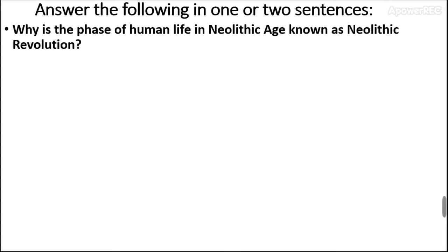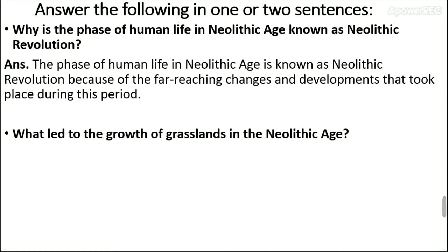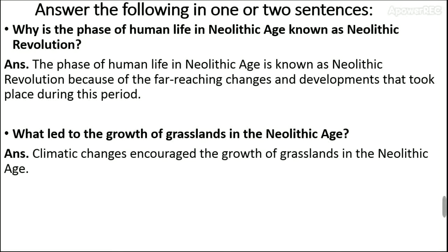First, we'll take up: answer the following question in one or two sentences. Why is the phase of human life in the Neolithic age known as the Neolithic Revolution? The phase of human life in the Neolithic age is known as the Neolithic Revolution because of the far-reaching changes and developments that took place during this period. What led to the development of grasslands in the Neolithic age? The climatic changes encouraged the growth of grasslands in the Neolithic age.